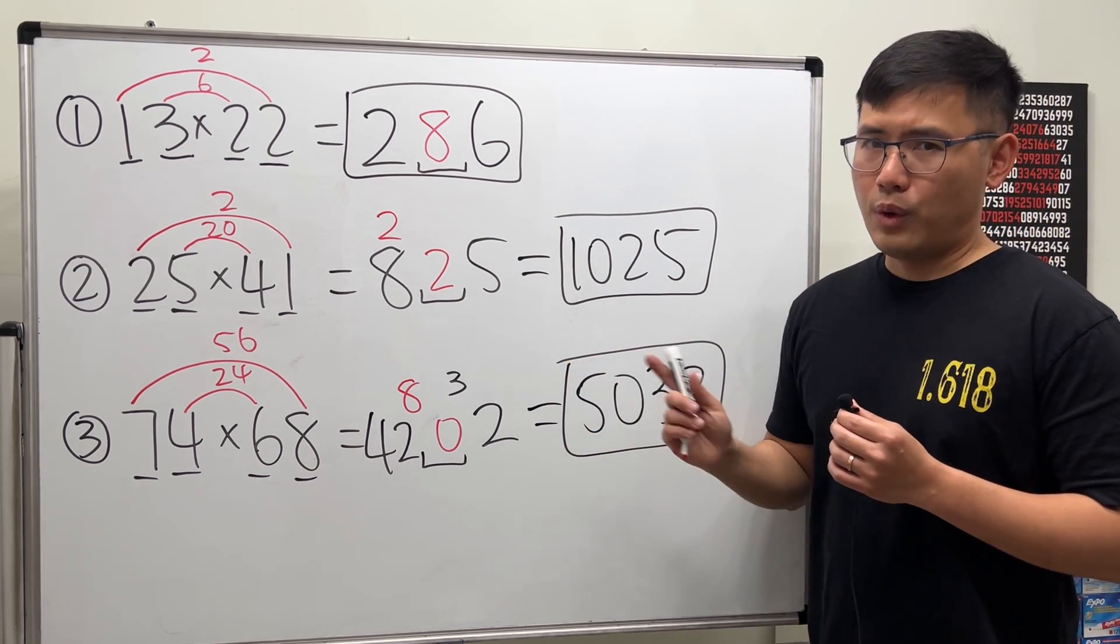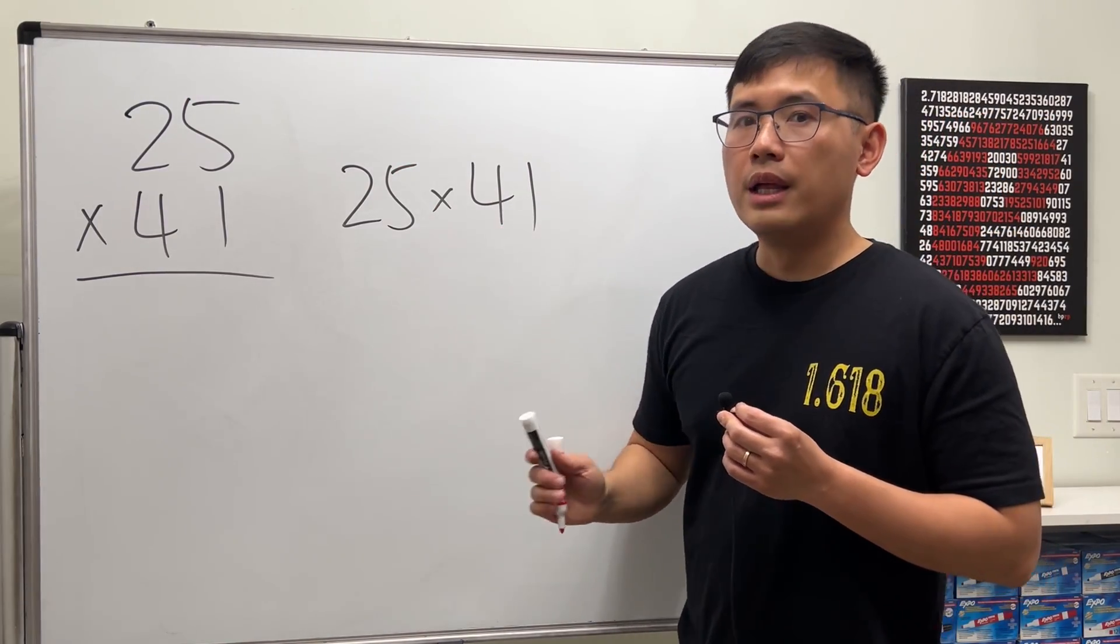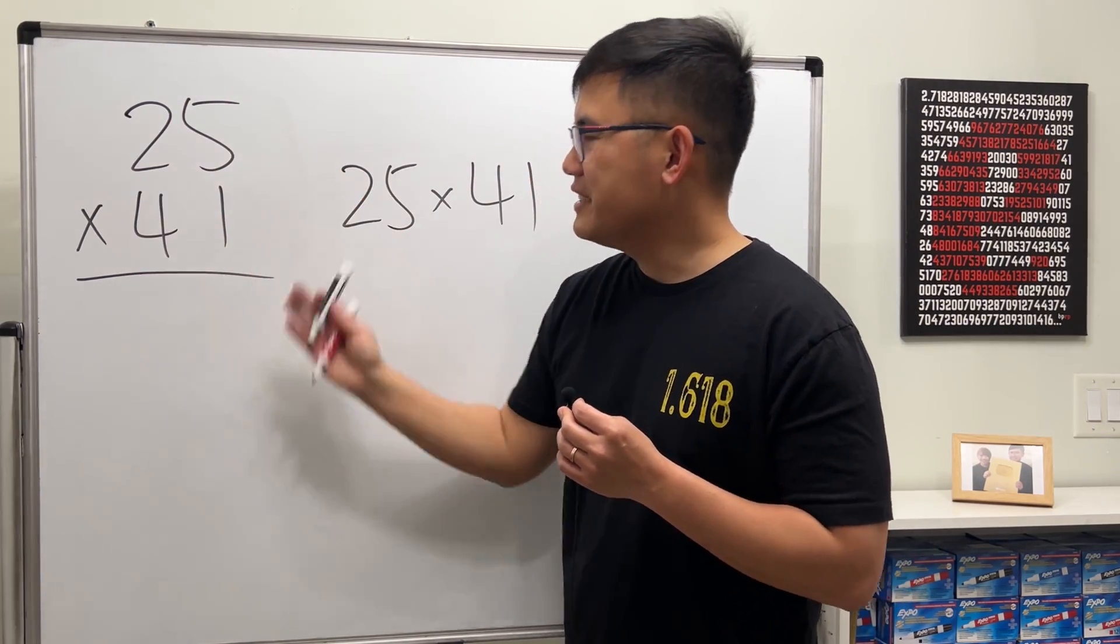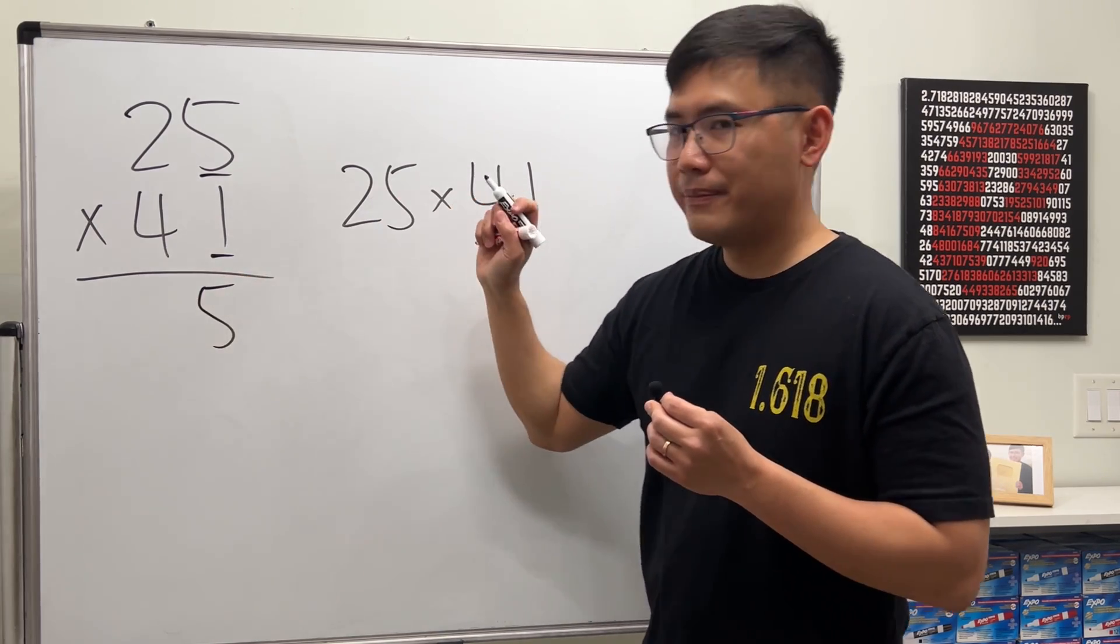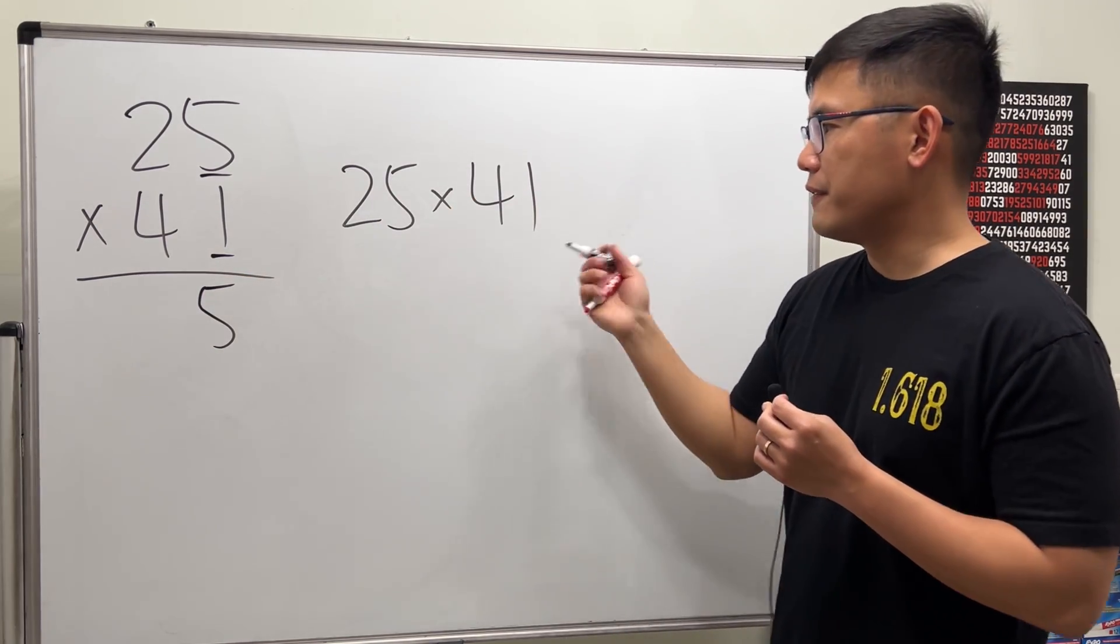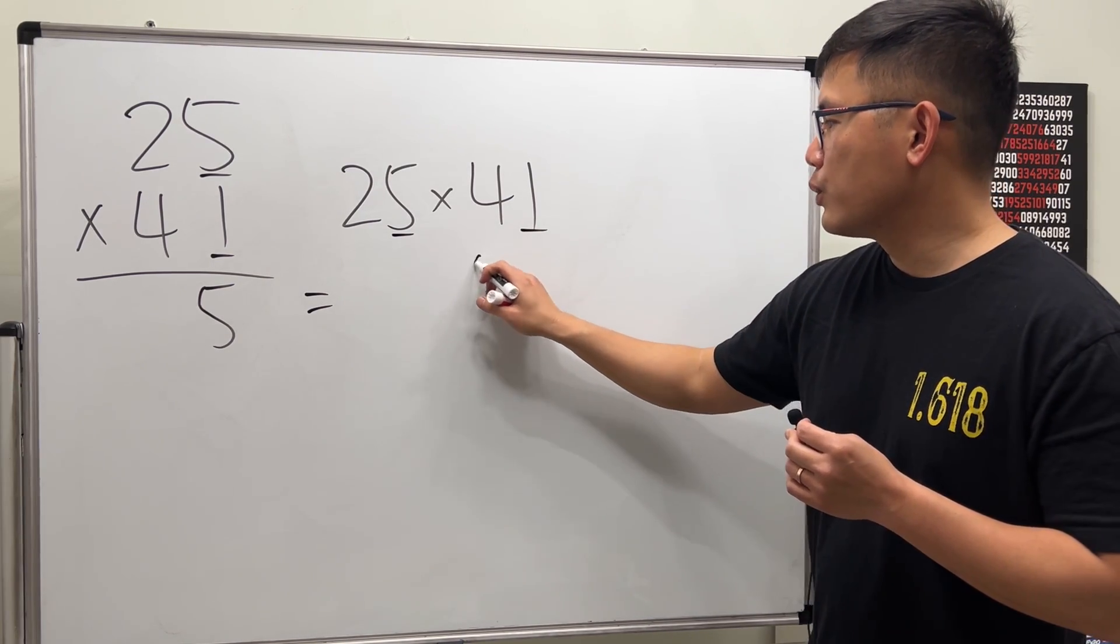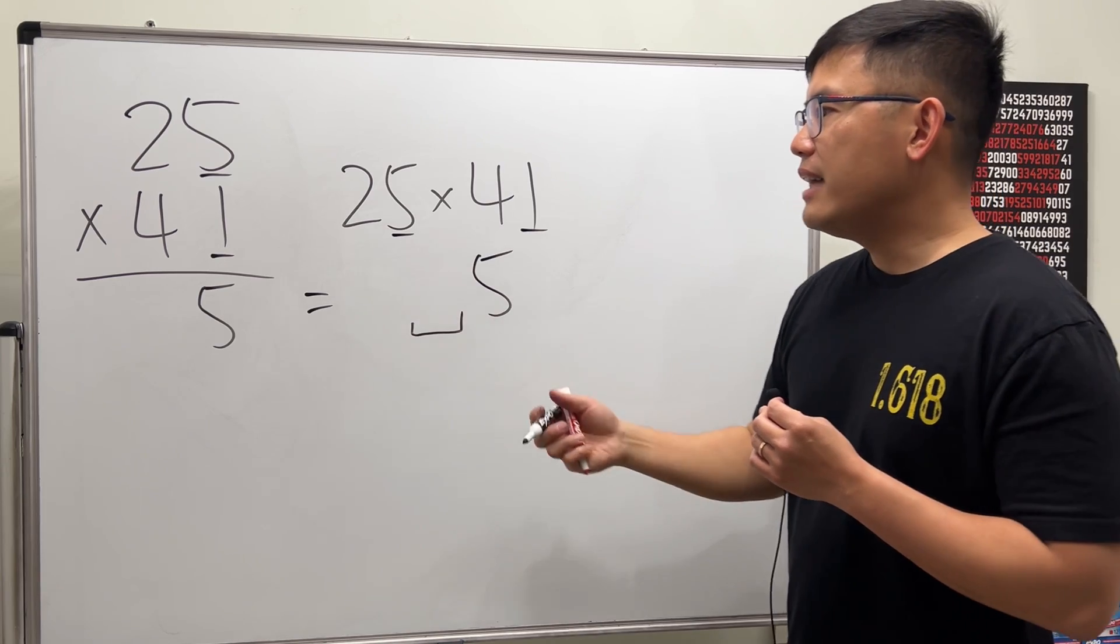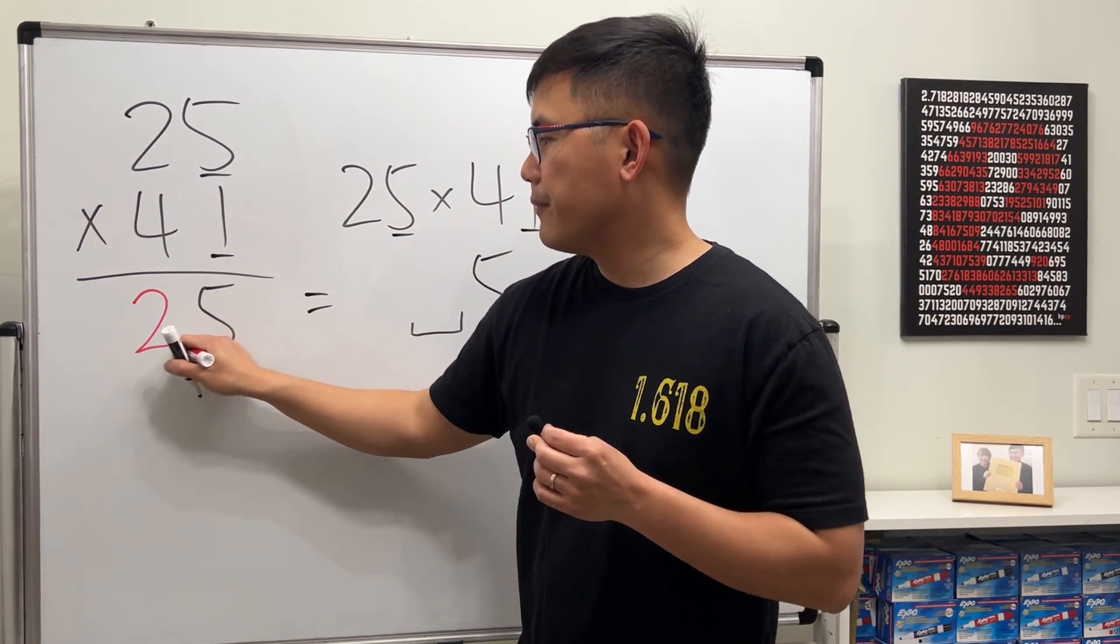But now let's talk about why it works. So let's look at the example 25 times 41, but let's do the good old way first. We start out like this and we multiply 1 times 5 and we put it down here. And that's exactly what we did for the fast way: we did the unit digit times the unit digit, which is 5, and then we leave a spot right here. Then we multiply 1 times 2 which is 2.